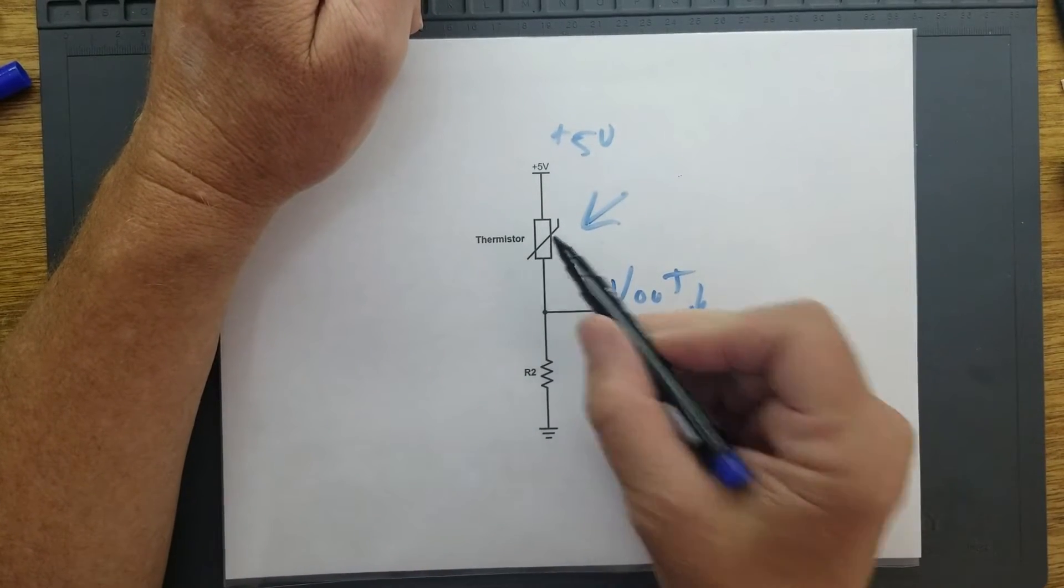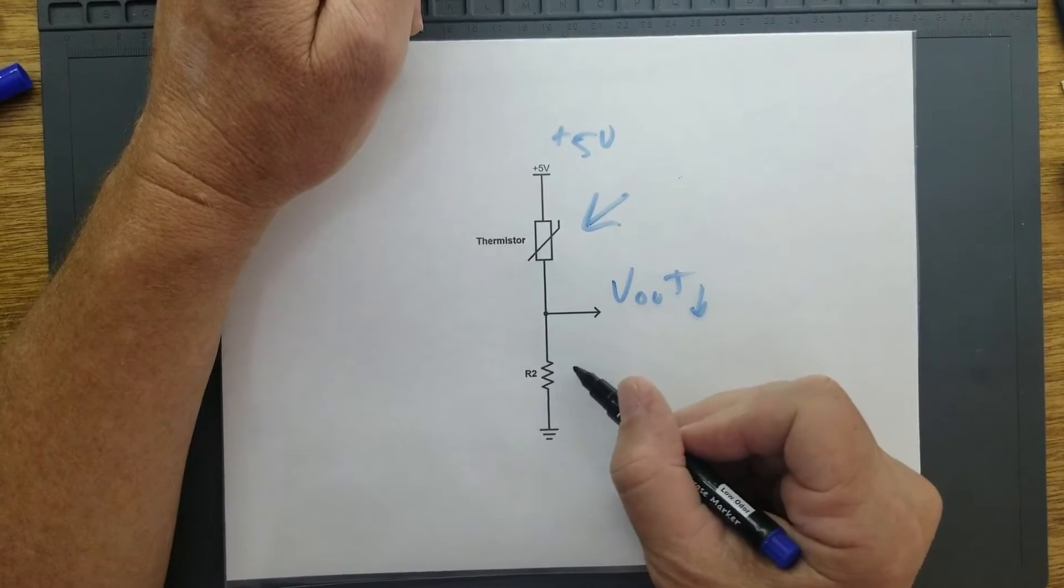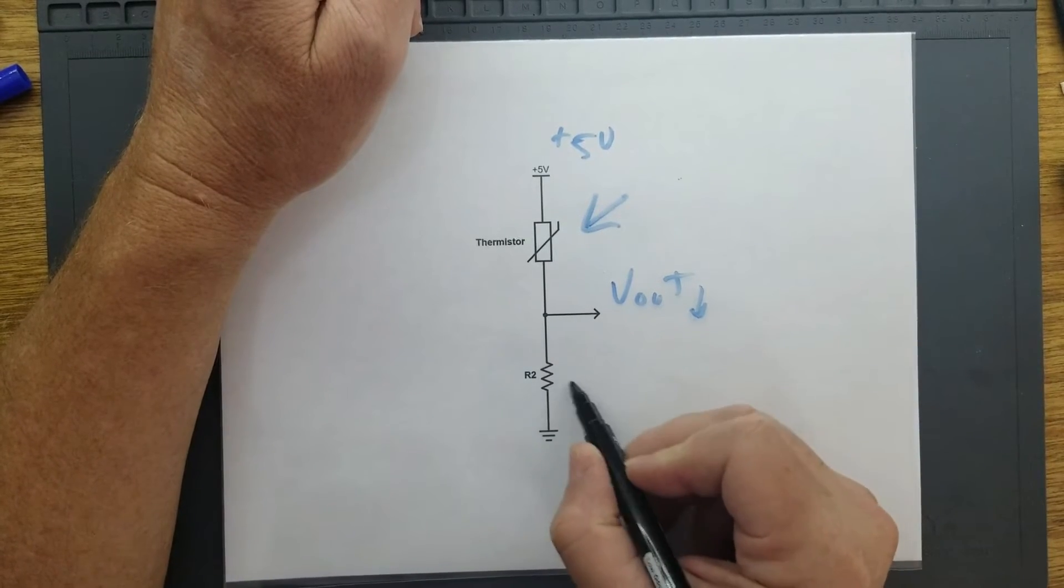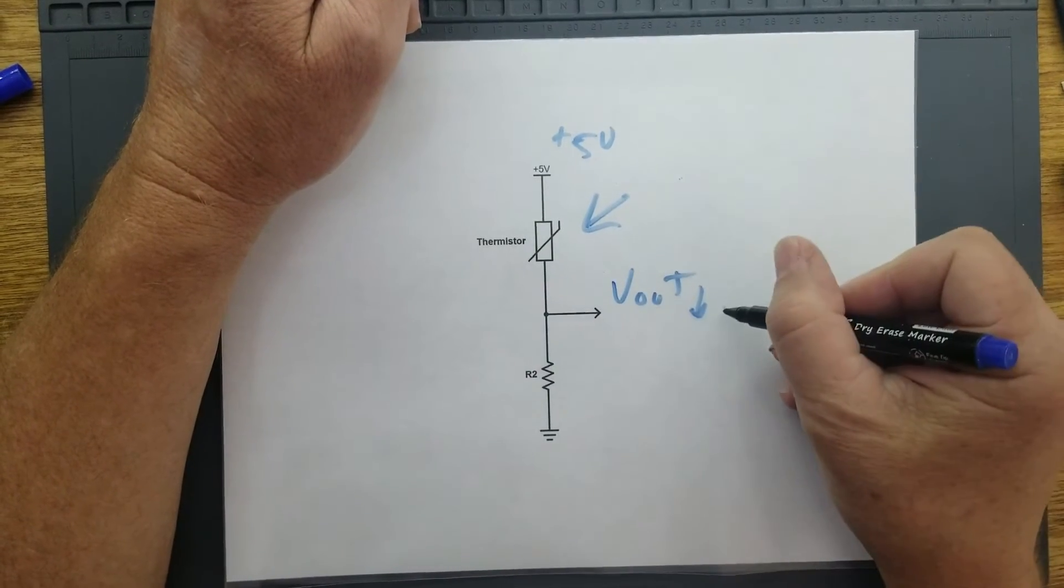As this resistance decreases, this becomes a larger share of the voltage divider here, this resistance causing the voltage to go up.